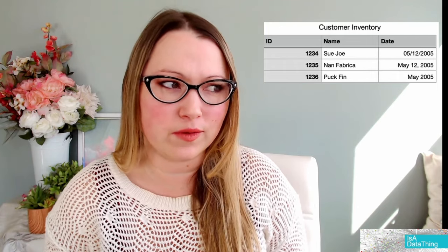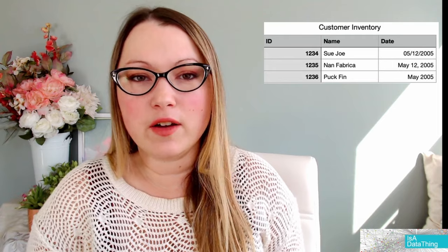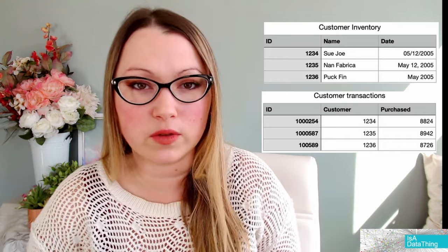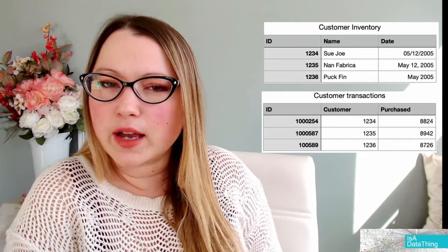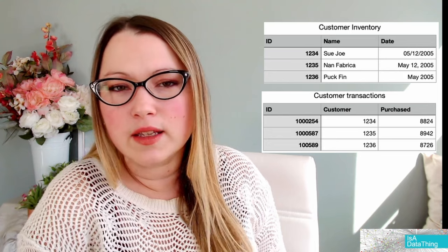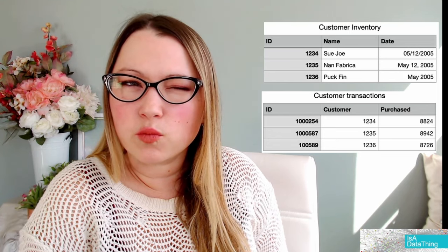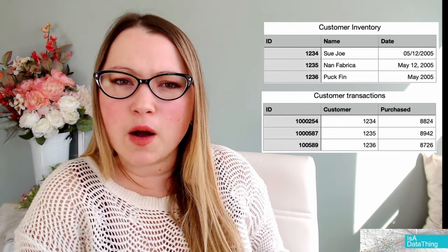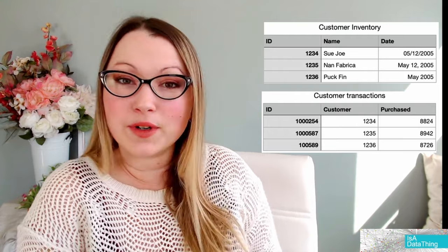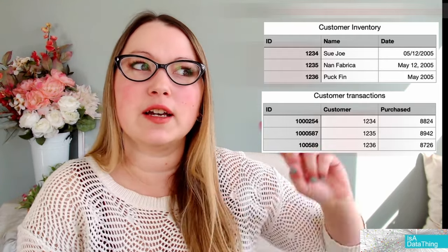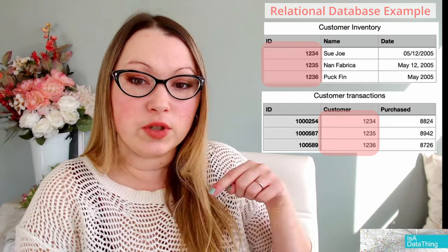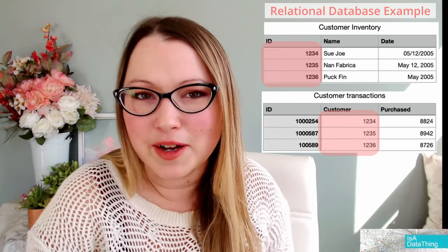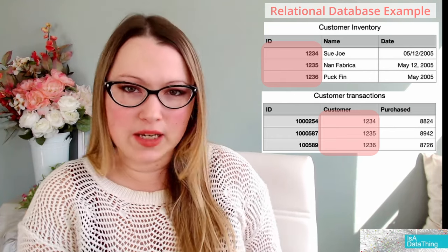Let's say you have another table — your customer transactions — because you are selling things to customers. We have an ID column and a customer column, but the data is a little different: instead of a name, we now have another ID. That's a foreign key — the customer ID from the last table ties this table to that information, so you can get the customer name, date, and all other information from the other table. In a graph, you don't have to do that.